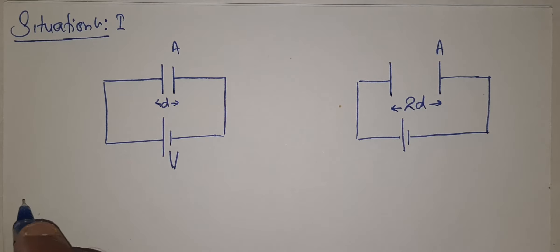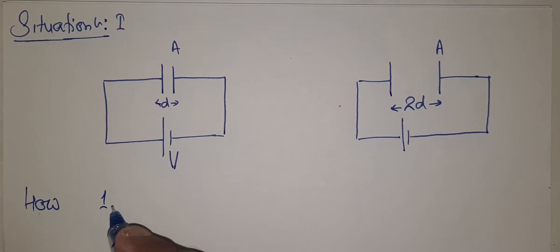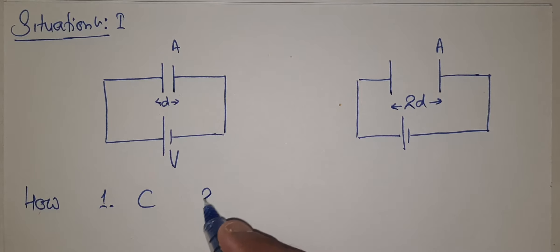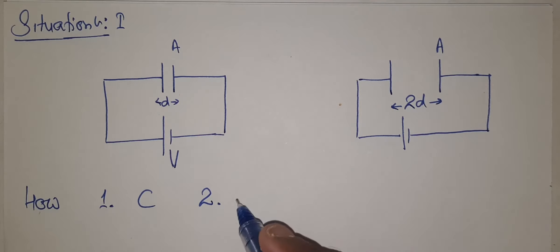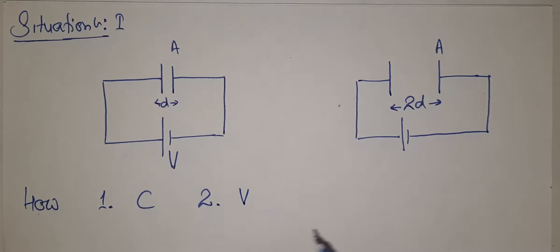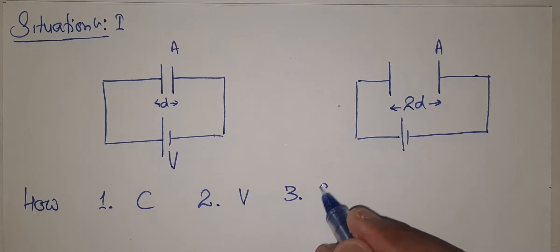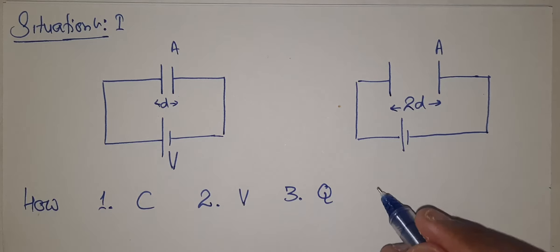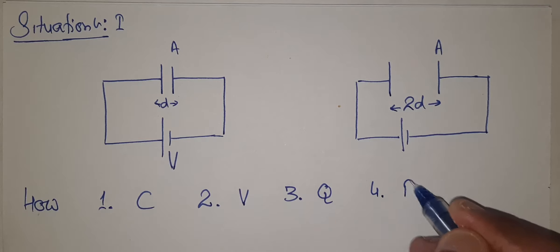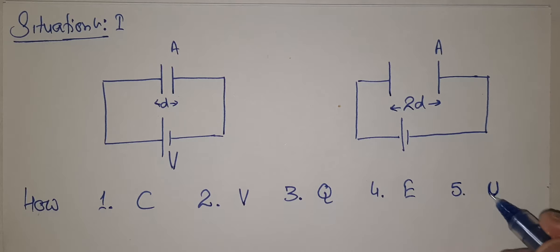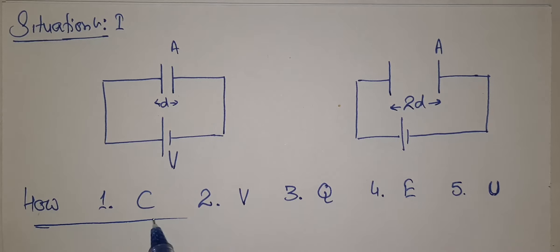Now the question is: how will the following change? Number one — capacity of the capacitor. Number two — potential difference across the plates. Number three — charge on each plate. Number four — electric field between the plates. And number five — energy of the capacitor. Let's study all these variables one by one.